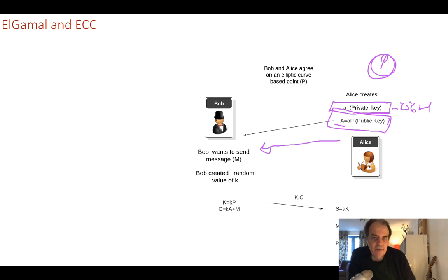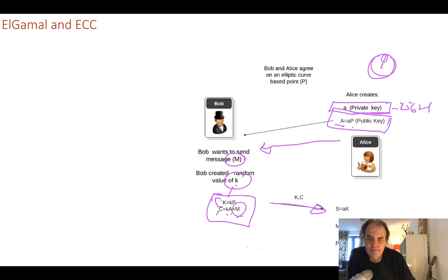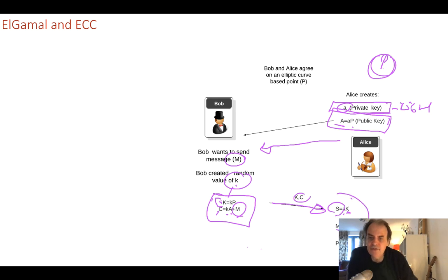Bob takes a random number K and produces a point K by multiplying the base point by K. He then creates C by multiplying K by Alice's public key A and adding the message point M — where the message is mapped onto the elliptic curve. The two values K and C are sent back to Alice. Alice calculates S as her private key A times K, and then recovers the message as C minus S.